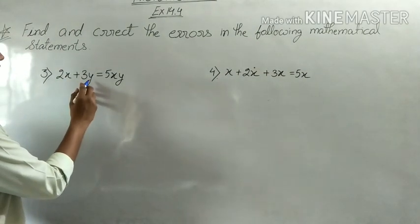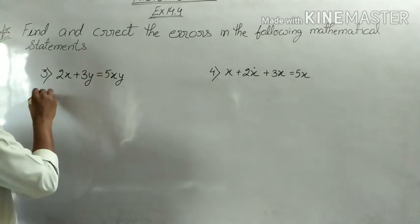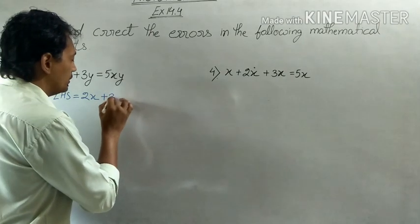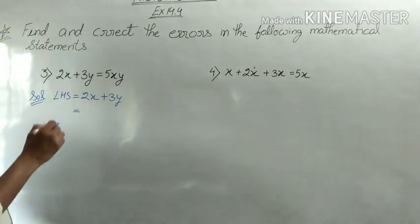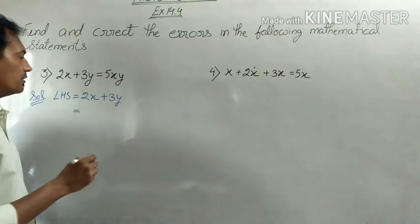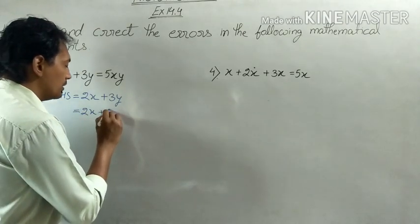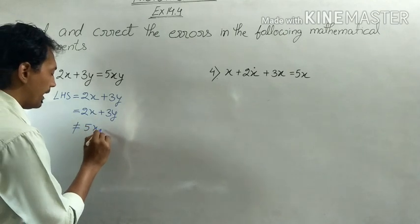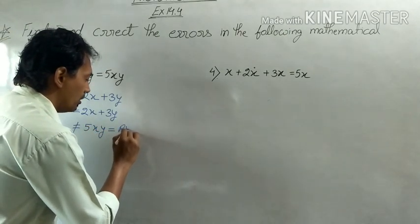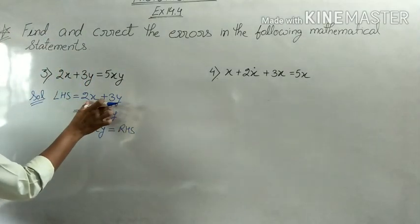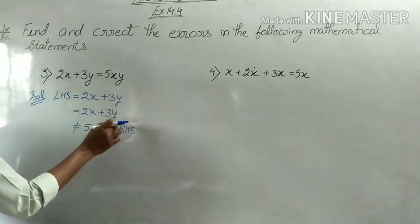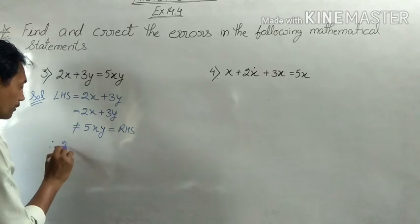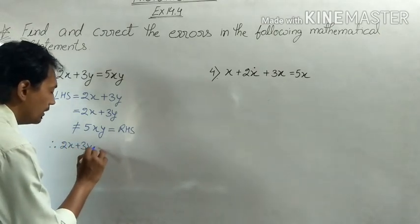Question number 3 states 2x plus 3y equals 5xy. Taking the LHS: 2x plus 3y cannot be simplified further since it is already in simplified form. So LHS equals 2x plus 3y, which is not equal to the RHS which is 5xy. Therefore this statement is incorrect.